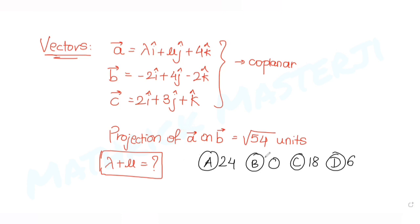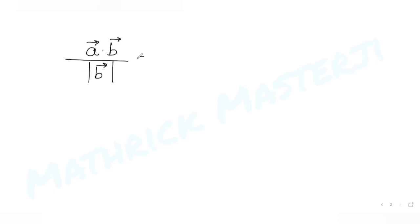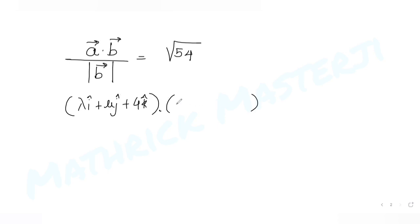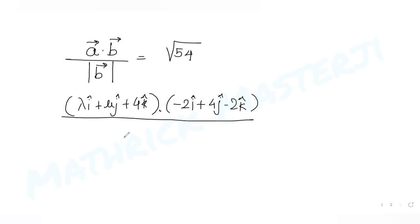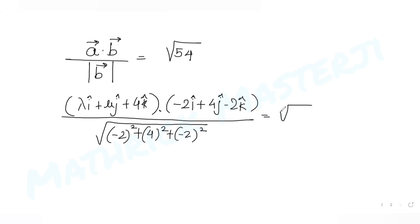We know that the projection of vector a on vector b is given as the dot product of the two vectors divided by the magnitude of vector b, and that equals √54. Vector a is λi + μj + 4k and vector b is −2i + 4j − 2k. The magnitude of vector b is √(4 + 16 + 4) = √24.